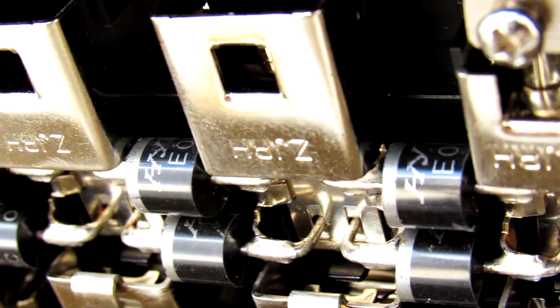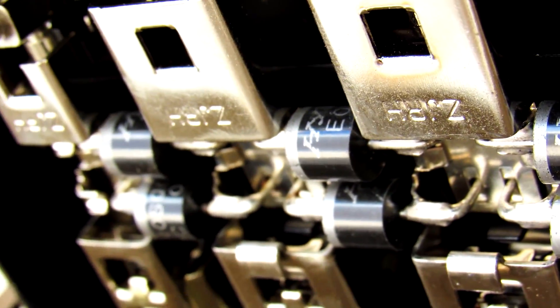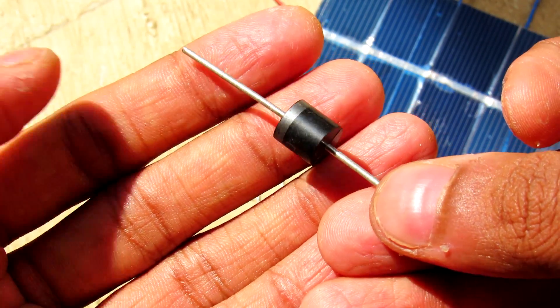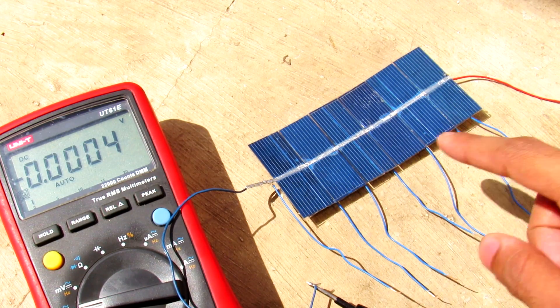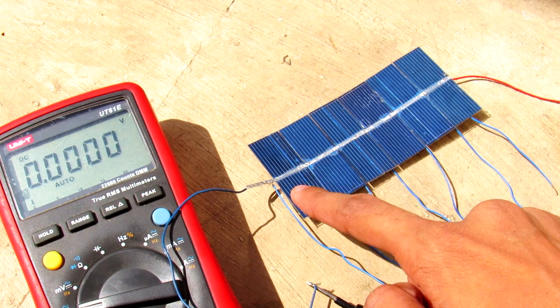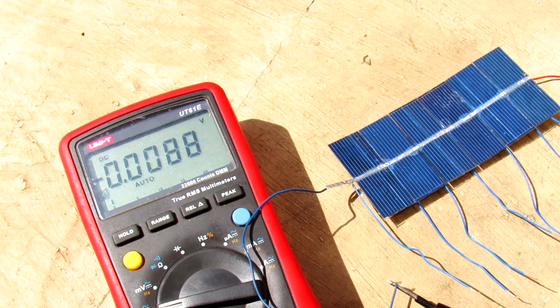Hey what's going on guys, it's Keda here and today we are going to see why we need a bypass diode in a solar panel. So here is the solar panel - these are six solar cells connected in series.